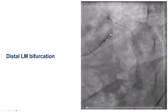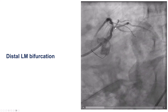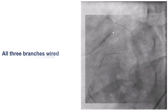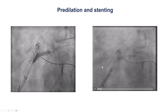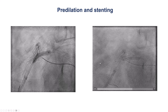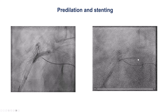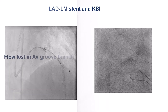We then turned our attention to the distal left main. There is disease into the proximal circumflex and disease into the proximal LAD. We wired all those branches. We did pre-dilatation and then decided to stent again using DK crush. One stent went into the first obtuse marginal on the circumflex and the other stent went into the LAD, overlapped with the previous stent.